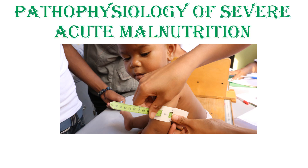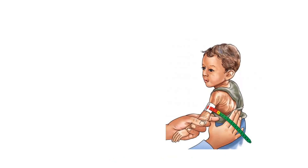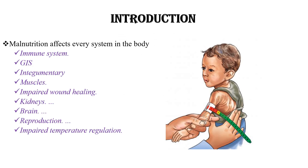Hello. Now I will discuss the pathophysiology of severe acute malnutrition. As you know, malnutrition affects every organ system and every function of our body. It affects body temperature regulation, reproduction, brain function, creatine function, cardiovascular function, our immune system, our gastrointestinal, integumentary, and muscle — every organ of our body. So let us discuss the pathophysiology of malnutrition as follows.